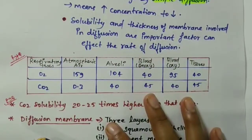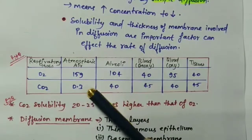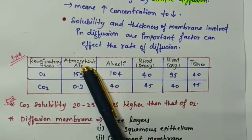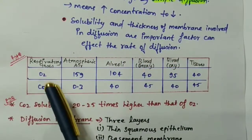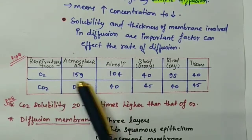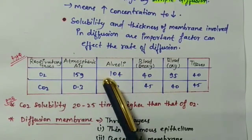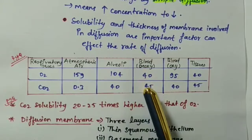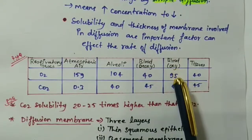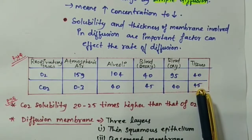Now let's look at the chart in NCERT. We will see how the partial pressure of oxygen and carbon dioxide is distributed in the blood. The columns are: respiratory gases, atmospheric air, alveoli, deoxygenated blood, oxygenated blood, and tissue. In the atmosphere, O2 is 159 mmHg and CO2 is 0.3 mmHg. You will see how the values of O2 and CO2 change across the alveoli, oxygenated blood, and tissue level.